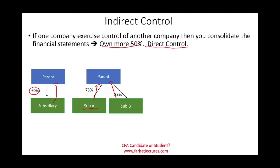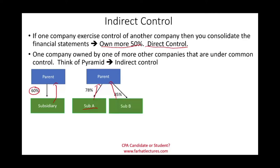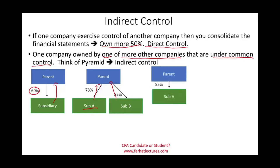What is indirect control? Think of when one company is owned by one or more other companies that are under the common control of one company — think of a pyramid. So you have a parent company that owns 55% of Sub A. If you own more than 50%, you control Sub A, and A will have to be consolidated with the parent. Now, what happens if Sub A also controls 60% of Sub B?